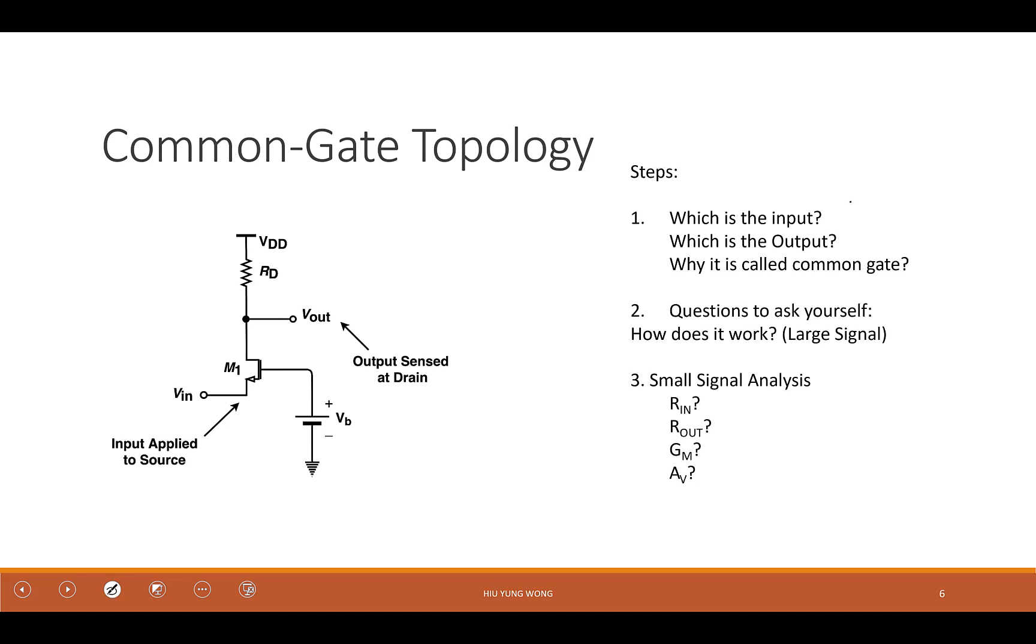So we will continue on what we have been doing to understand what a common gate is. As I said, the input is at the source, the output is at the drain. And it's called common gate because the common gate is at AC ground. Why do I need to bias the gate, by the way? Why don't I just ground it? To turn it on, to bias it. But it is constant, so it is AC ground. When we're doing AC analysis, this is ground. And then we need to understand how it works.